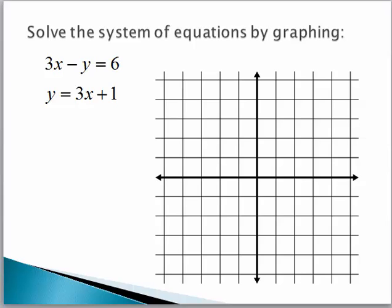One more example. Solve this system. You'll notice in this case, your lines are in two different forms. This is the standard form, which typically we graph by plotting intercepts if we can. The other is given in y = mx + b form. I'll start with that one because it's easier.